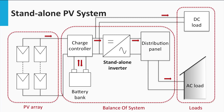The stand-alone inverter is responsible for efficient power conversion from DC to AC power over a wide range of loads. The better the inverter, the higher the efficiency over a variety of loads. Together, the charge controller, battery, inverter, distribution panels and the wiring make up the balance of system — or BOS — which is everything in the PV system minus the PV array.